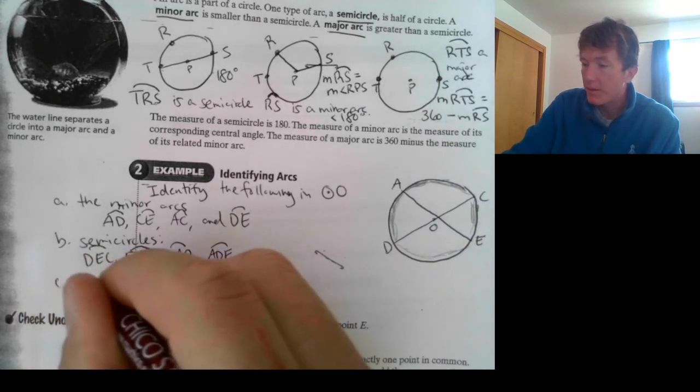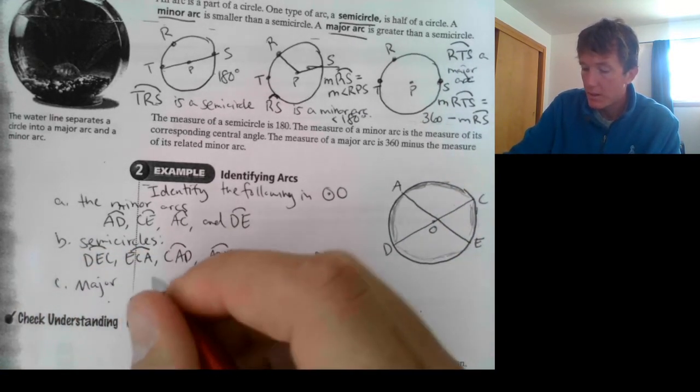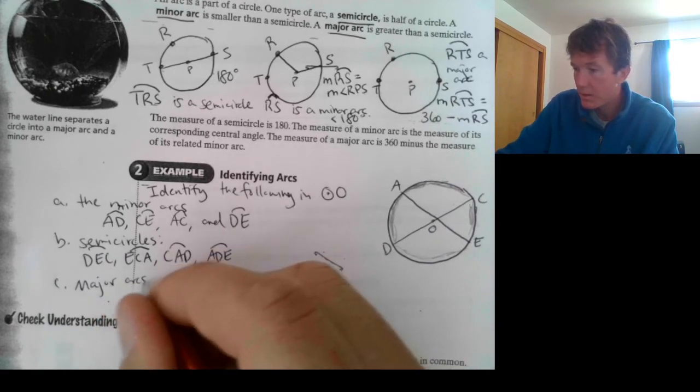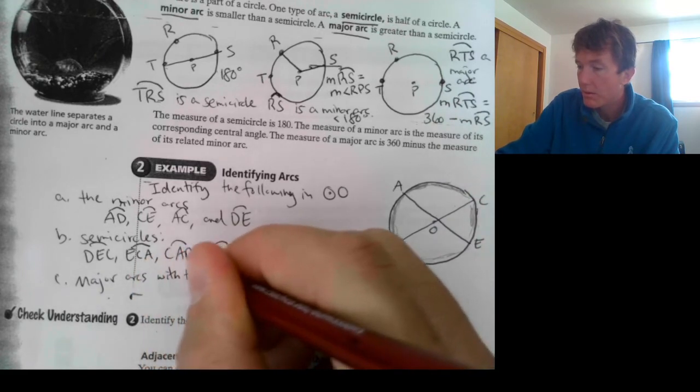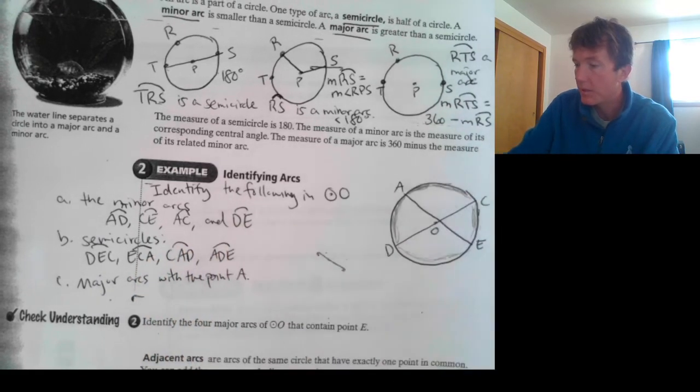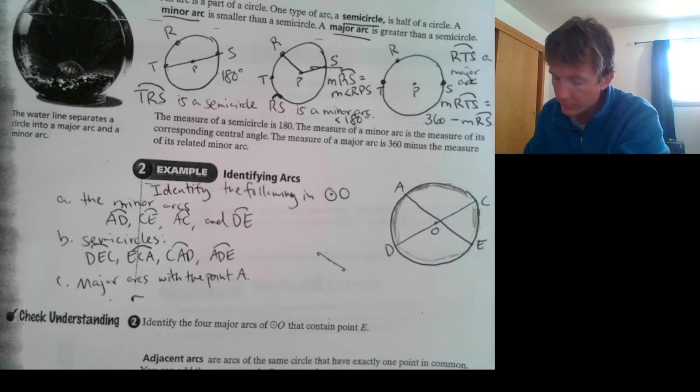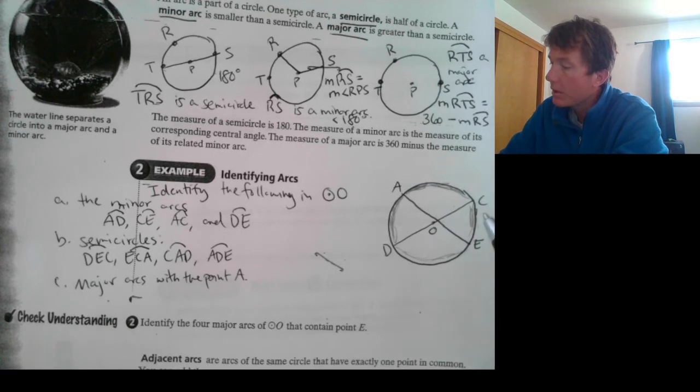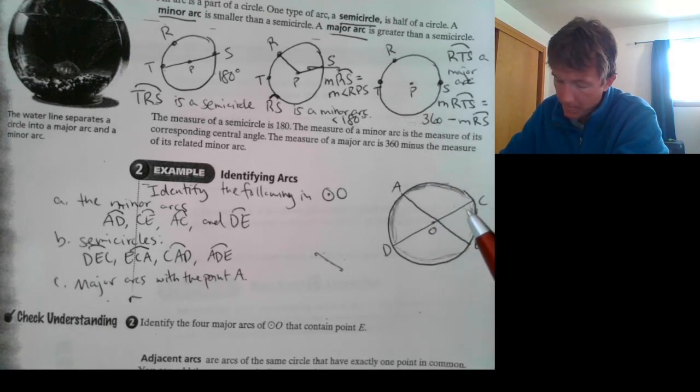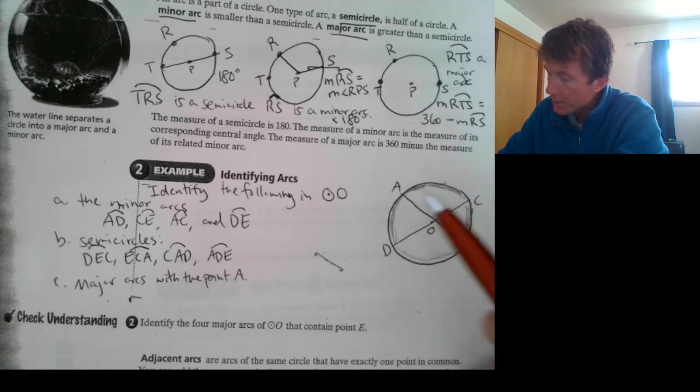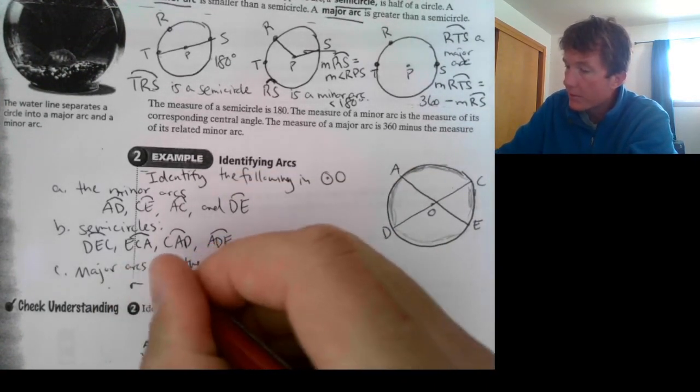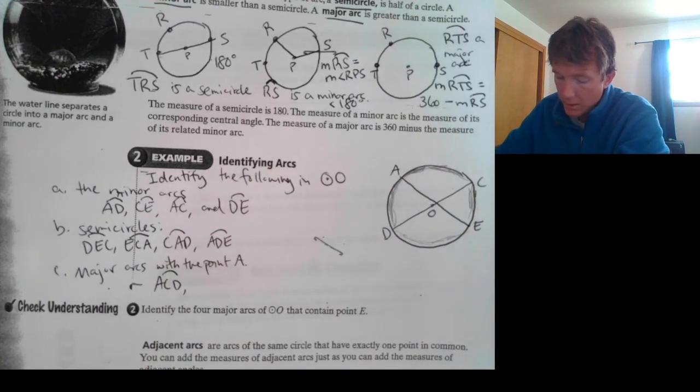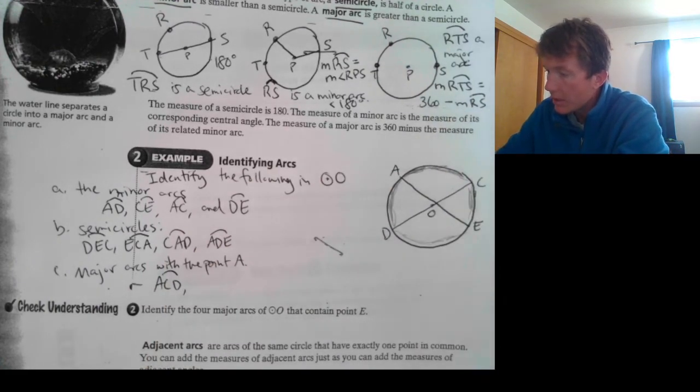And then, let's list all of our major arcs that contain the point A. With the point A. With the point A. Okay. Anything with the point A. So, it looks like ACD is one of them. So, we're going from A, C, all the way to D. That's a major arc, since it's greater than a semicircle. CEA. CEA is another.